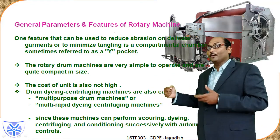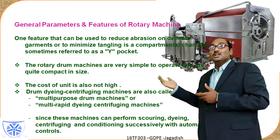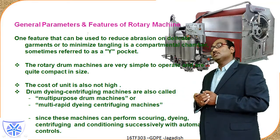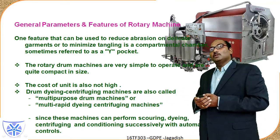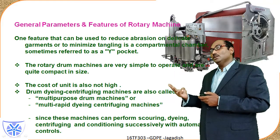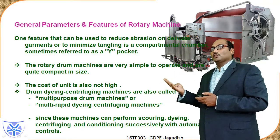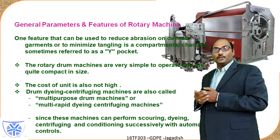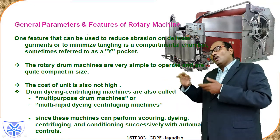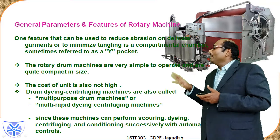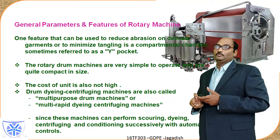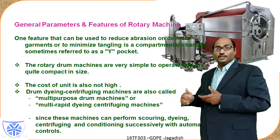The rotary drum machine can perform scouring, dyeing, centrifuging, and conditioning such as softener application — all successively within one machine. This is time saving and efficient. Sometimes scouring may have been done before garment construction, but if required, all these operations can be completed within this machine.